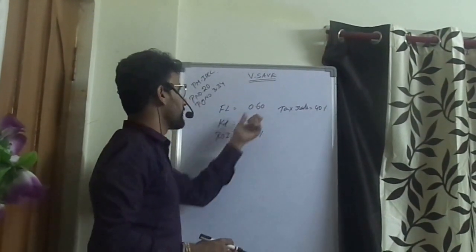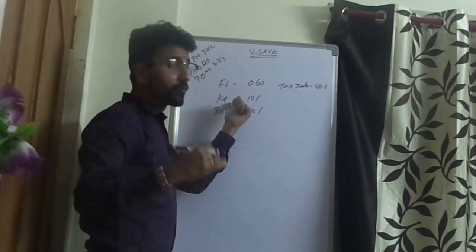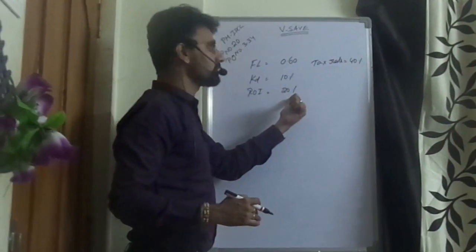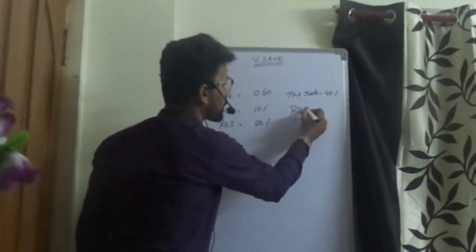Question says the financial leverage is 0.6, cost of debt before tax 10%, return on investment 20%, and tax rate 40%. They ask you to compute return on equity.